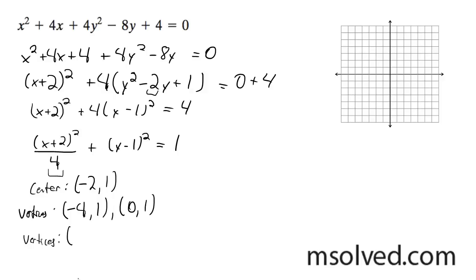Foci is going to be square root of 4 minus 1, which is the square root of 3. And that's going to be negative 2 minus square root of 3, 1, and negative 2 plus square root of 3, 1.